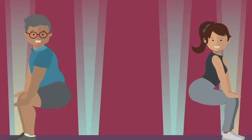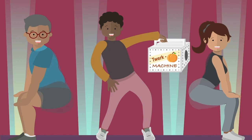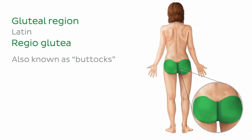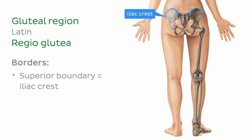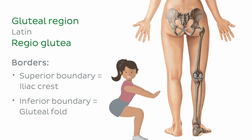Let's begin with the gluteal region — the buttocks — that's hardest to miss on our anatomical map. The gluteal region, also known as the buttocks, lies posterior to the bony pelvis and extends from the top of the hip bone, known as the iliac crest, to the gluteal fold below. If any of you are into doing squats at the gym, you'll know that the gluteal region is made up of mostly muscles, some big and some small.